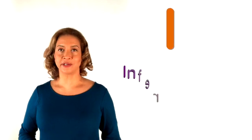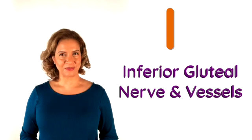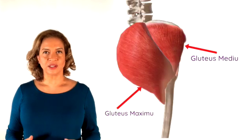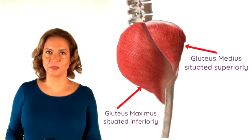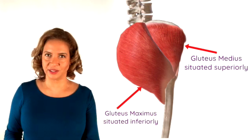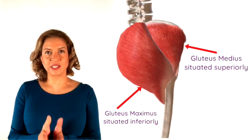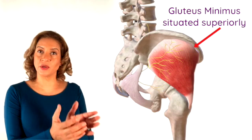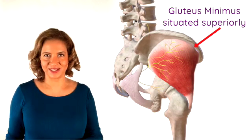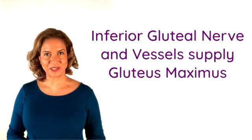I is for the inferior gluteal nerve and artery, which go on to supply the gluteus maximus. Now I used to think the gluteus is such a big muscle that it really should be supplied by the superior gluteal nerve. But the superior gluteal nerve actually supplies the gluteus medius and minimus. And when you look at where it is on the body, it absolutely makes sense. So hence, the inferior gluteal nerve and artery supplies gluteus maximus.